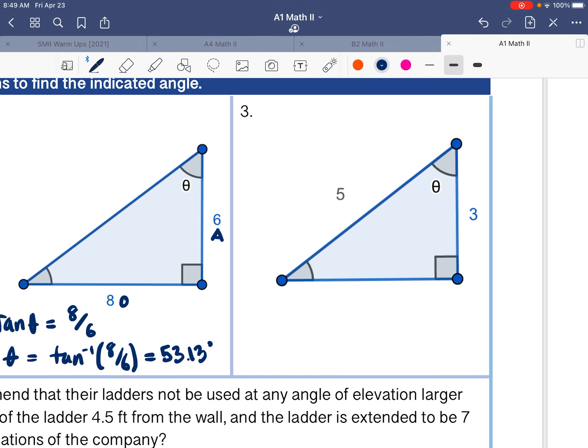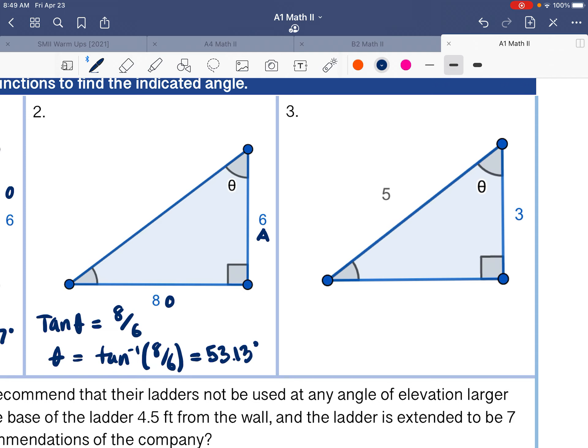One more, we have a reference angle in the upper corner. And so this is the adjacent side, and this is the hypotenuse. So we should be using cosine here. So we have cosine of theta is equal to 3 over 5. And then we take cosine inverse of both sides, which again gives us a value of 53.13.